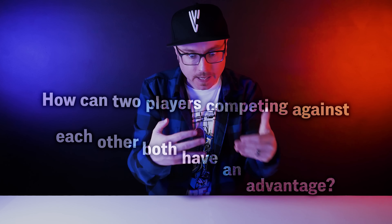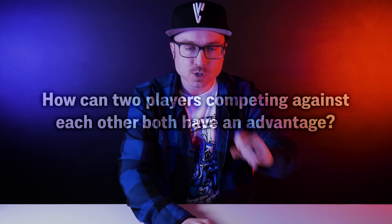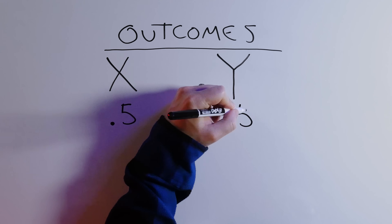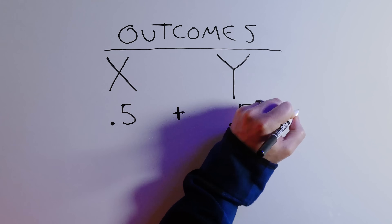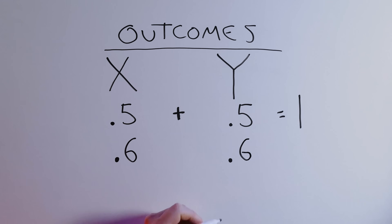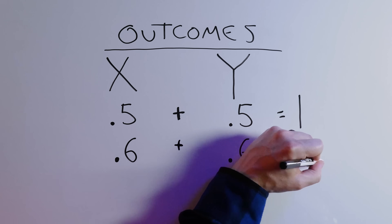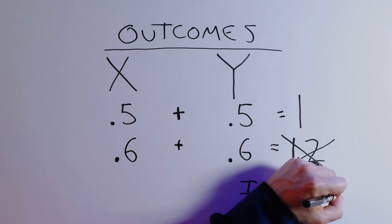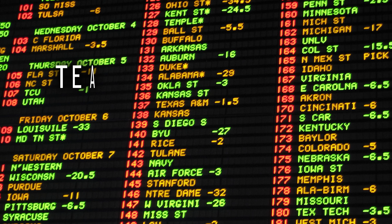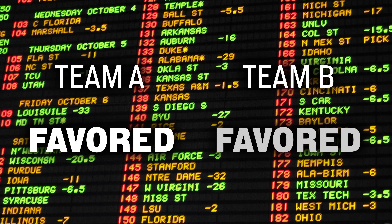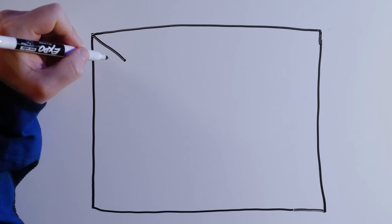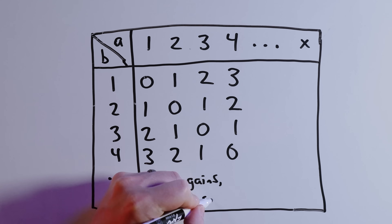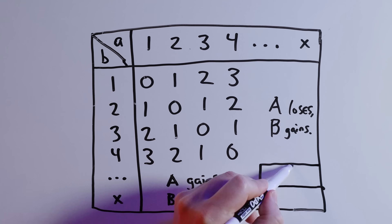The question is, how can two players competing against each other both have an advantage? Here's how — they can't! If there are two outcomes, X and Y, we can assign probabilities to each, and adding those probabilities together has to add up to one. Having an advantage would mean a probability greater than 0.5. If X and Y are both greater than 0.5, you're going to get more than one when you add them, and that's probabilistically impossible. It'd be like betting on a sports game where Vegas says both teams are favored to win. Maurice Krejcik's payoff matrix for the wallet game shows that the two players have exactly the same probabilities of winning. It really is 50-50, and the math proves it.